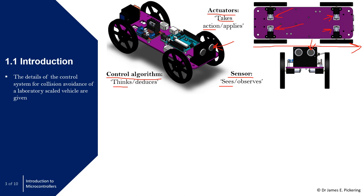If you apply this to a human being, the sensors are effectively your eyes — you observe. Say for example you're walking towards a brick wall: you observe, and based on that observation you reduce and stop. You would think, I'm getting closer, so I need to stop. The control system on this lab-scaled vehicle works exactly the same way: it measures distance, compares it to the desired distance, and takes action.